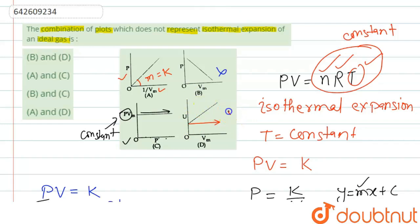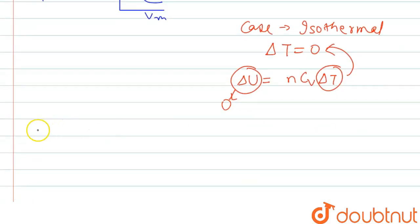So our correct pairs are A and C, and wrong pairs are B and D. So if we see the option, B and D is the correct answer because they do not represent the correct plot. So we can write the correct answer is B and D.